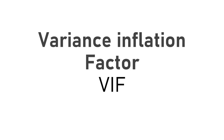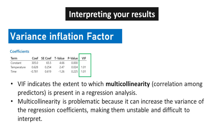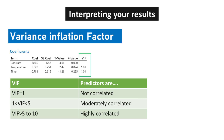Variance Inflation Factor, VIF: when there is a high correlation between two or more predictor variables in a regression analysis, it is difficult to evaluate the individual impact that each correlated predictor has on the response. VIF indicates the extent to which multicollinearity — correlation among predictors — is present. Multicollinearity is problematic because it can increase the variance of the regression coefficients, making them unstable and difficult to interpret. VIF equal to 1 indicates not correlated; VIF between 1 and 5 indicates moderately correlated; VIF greater than 5 means highly correlated.